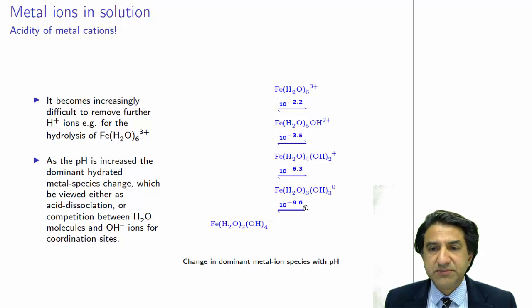Oh, there's a big jump. There's a big jump from 3 to 6 and 6 to 9 here. So basically, it becomes increasingly difficult to remove hydrogen ions after the first one. The first one's relatively easy, 10 to the minus 2.2. Then it becomes 10 times harder to remove the next one. Then it becomes about 1,000 times harder, and then a little bit more than 1,000 times harder.